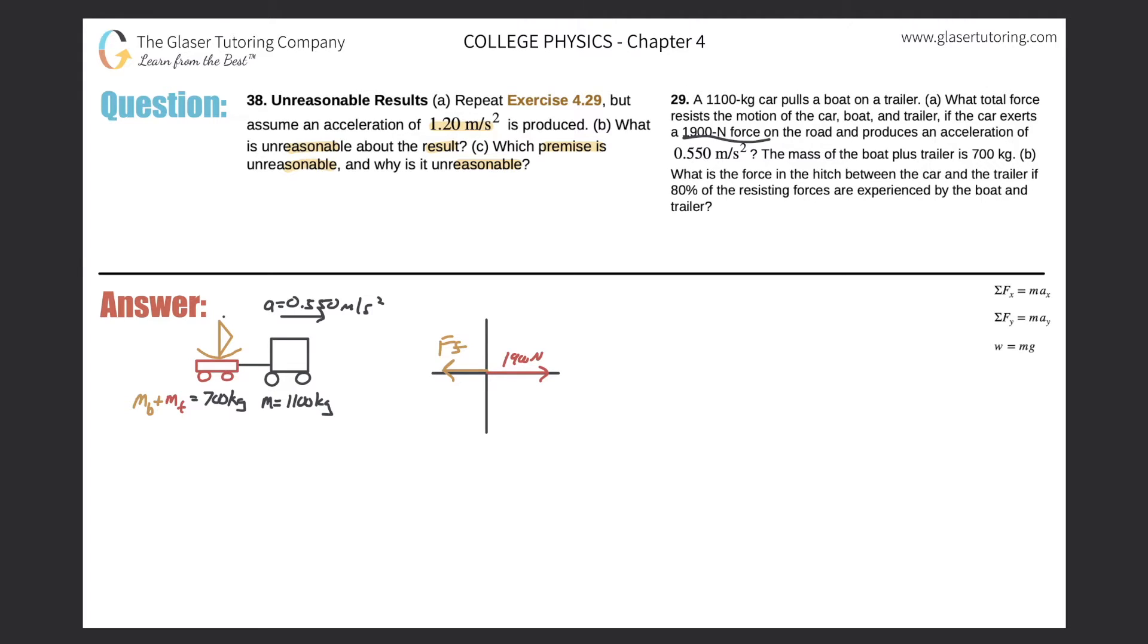So what I can now do is look at the information that they gave us. We have an acceleration here of 1.20 meters per second, and I do know the total mass, right? The combined mass of this whole system would be 1800 kilograms because 1100 plus the 700.